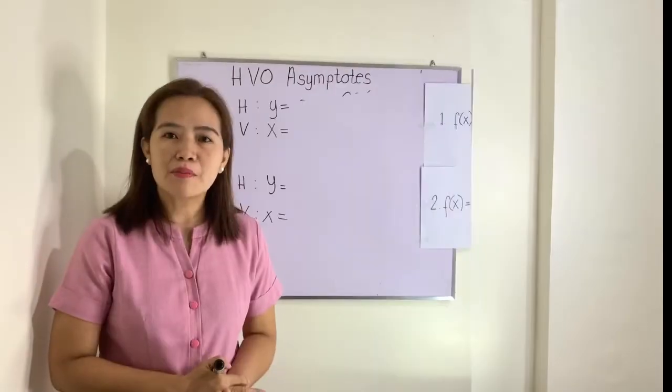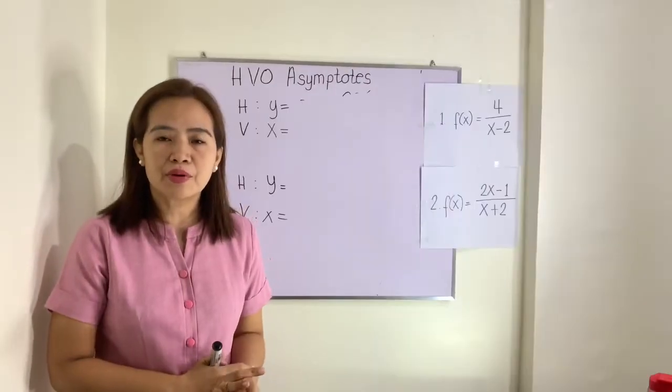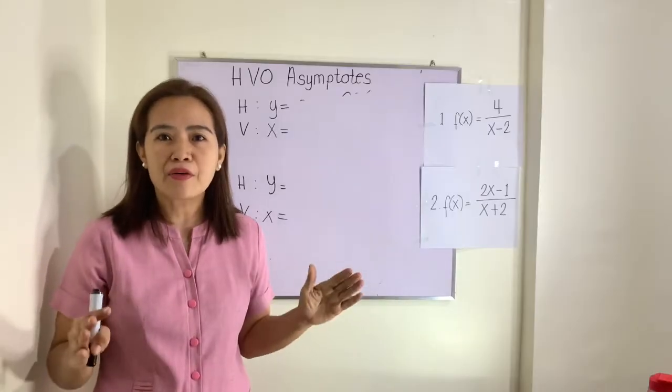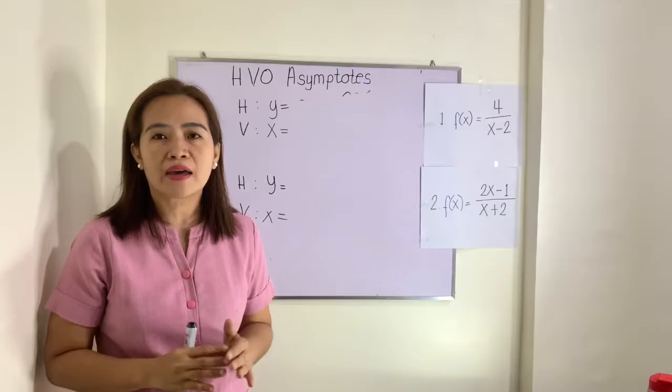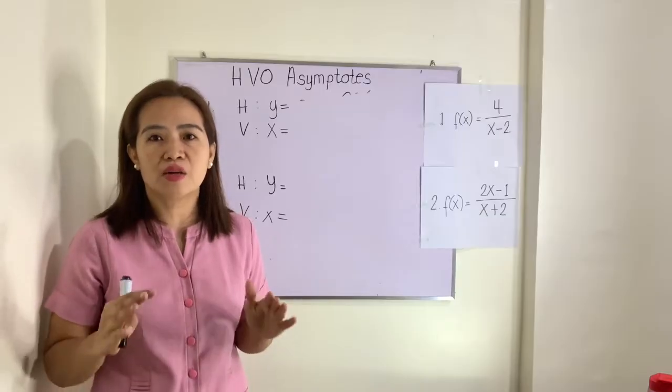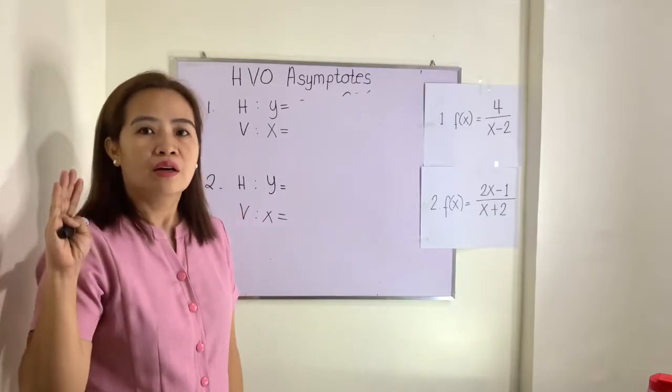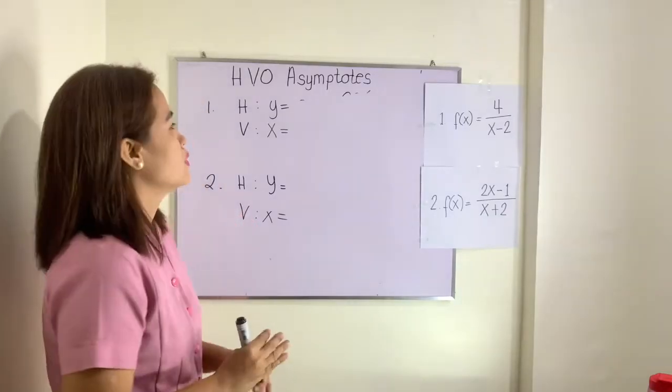Now, how do we find the equation of the vertical line, the equation of the horizontal line, and the equation of the oblique line? That is what we will study — how to find the HVO asymptotes. Remember, we are not graphing them; we will just find the horizontal, vertical, and oblique asymptotes.